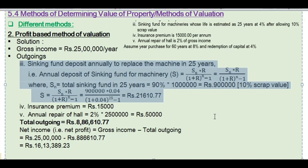The annual sinking fund deposit for machinery over 25 years is calculated as: S equals S_n into R divided by (1 plus R) power n minus 1, where R is the rate of interest at 4% and S_n is the total amount of sinking fund to be accumulated.